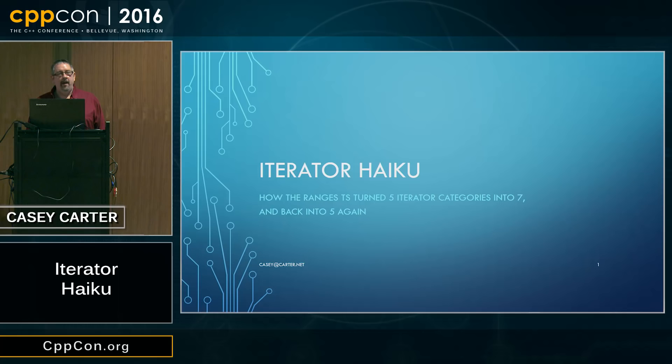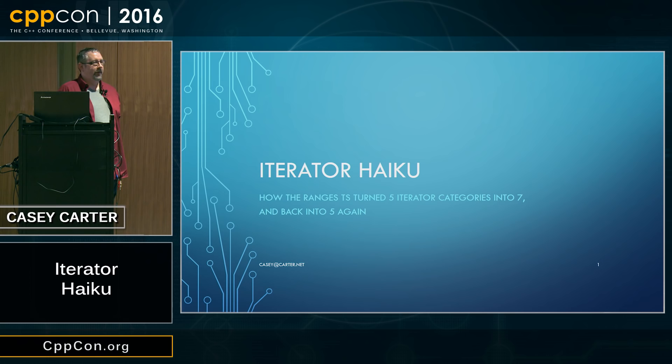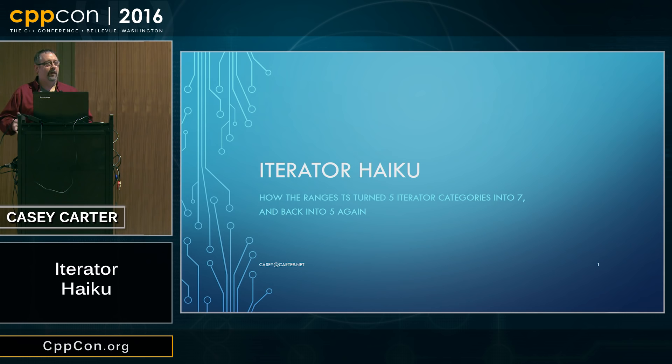I'm here today to talk about iterator haiku, which is a pretty name for a design change that occurred in the Ranges TS, where we took the C++ standard's five iterator categories and expanded them into seven iterator categories to describe more problems, and then found a flaw in our design and in the process of correcting it, turned the seven iterator categories back into five again without reducing the descriptivity of the system.